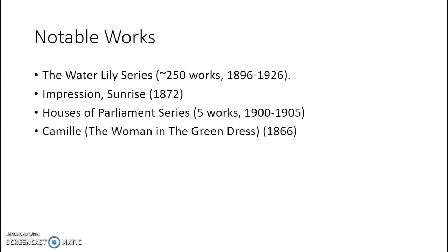Monet is most known for his famous Water Lilies series, painting over 215 in the series between 1896 and 1926. Besides the Water Lilies, he also painted works such as Impression, Sunrise, which gave name to the Impressionist movement — though it was meant to be derogatory. He also painted the House of Parliament series in London, and his first wife in Camille, or The Woman in Green.